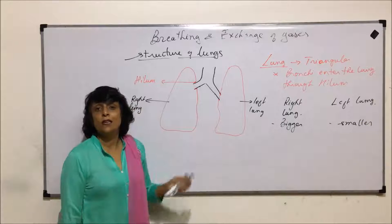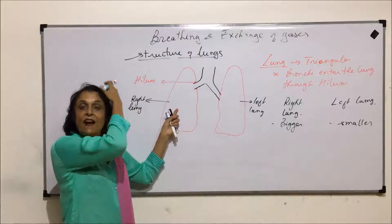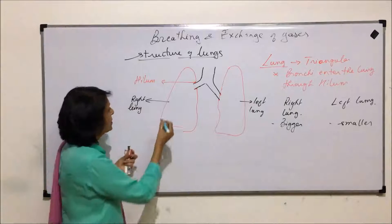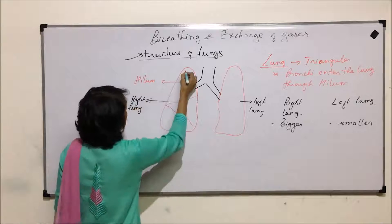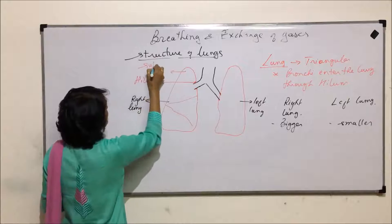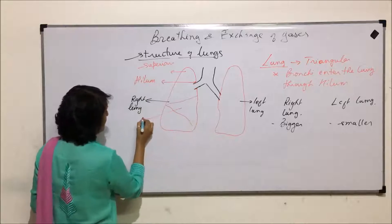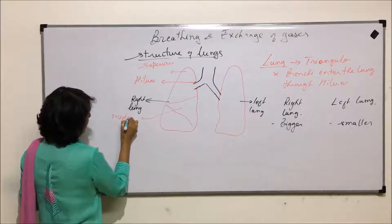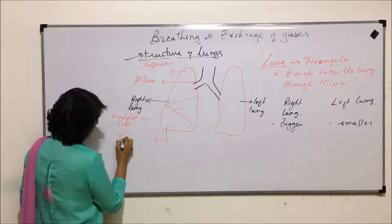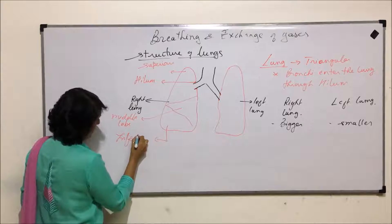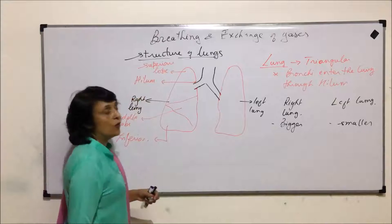The right lung is divided into three lobes. The upper lobe is known as the superior lobe, the middle one is the middle lobe, and the lower one is called the inferior lobe. So there are three lobes in the right lung.